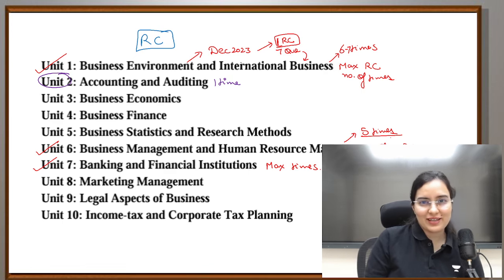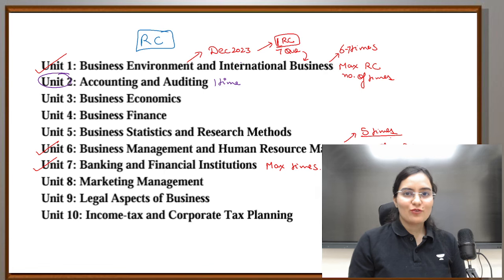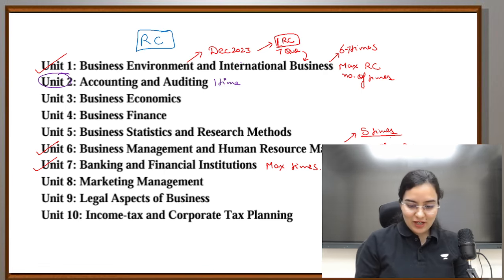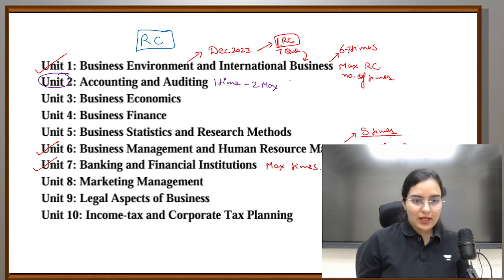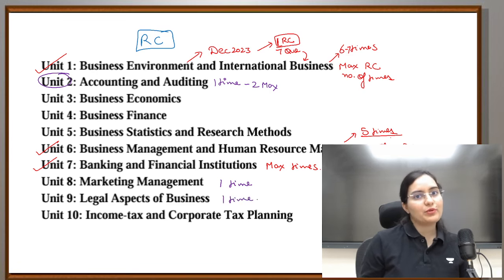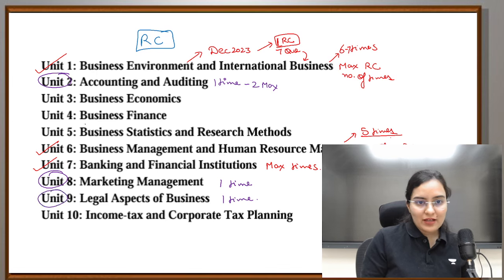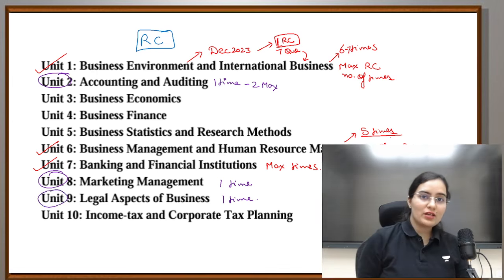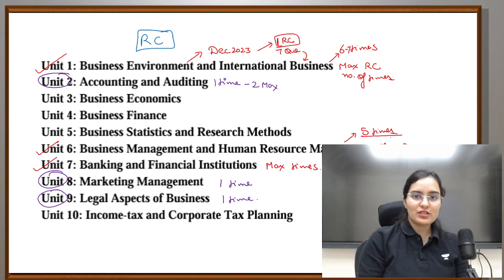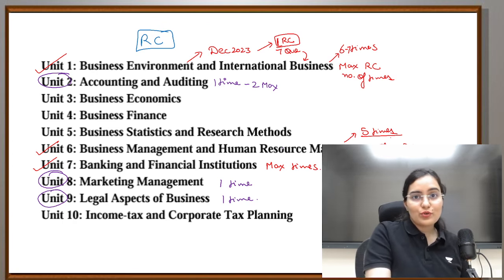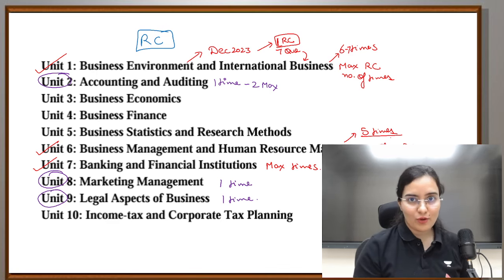When we talk about other units, in some units reading comprehension appeared only one time — just one time. From accounting and auditing, reading comprehension appeared from standard costing — one or maximum two times. From some other units also, only one time each. The units I have marked in red are those with very high chances of reading comprehension coming from them. The inference we draw is that whenever you are doing previous year questions, do not leave the reading comprehension — that is the biggest mistake learners make.